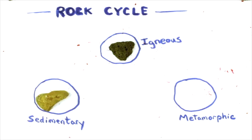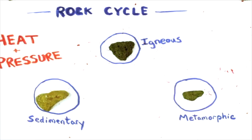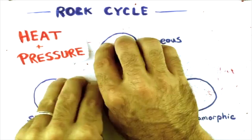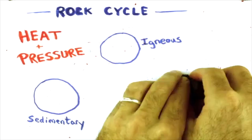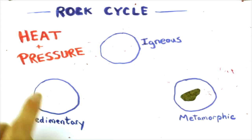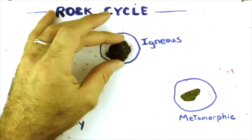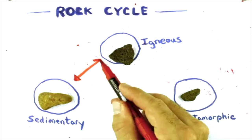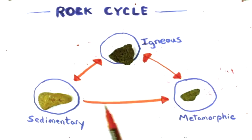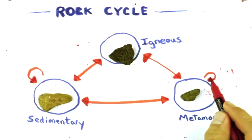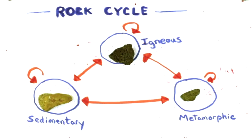And likewise, if you were to take any of those forms and put a lot of heat and pressure on them, they will become metamorphic rock. So almost every rock can become another rock in this giant, cool rock cycle.